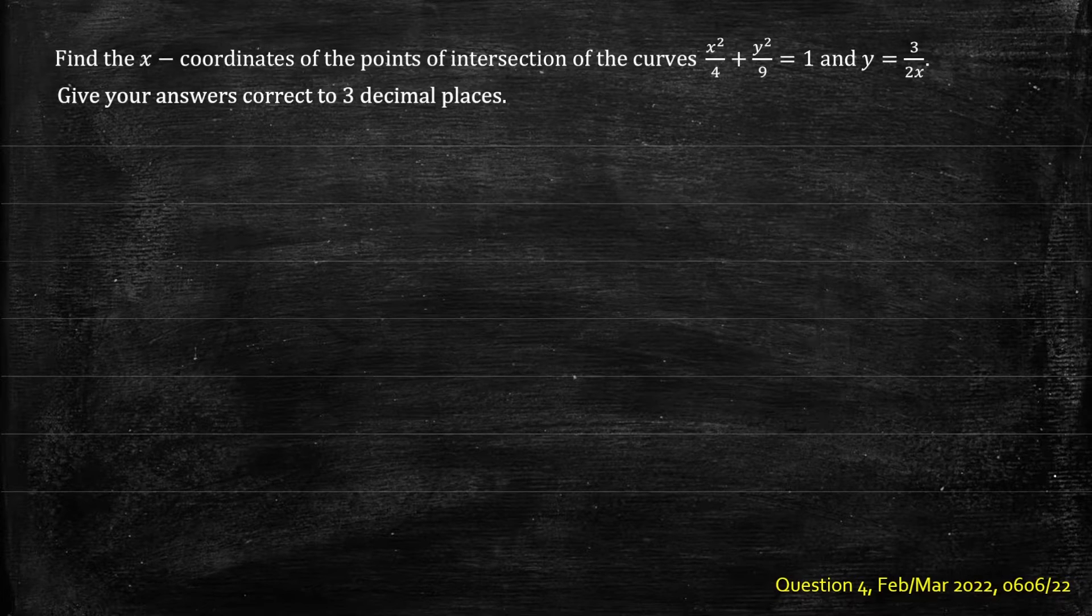Hi everyone, in this question we want to find the x-coordinates of the points of intersection of the curves x squared on 4 plus y squared on 9 equals 1 and y equals 3 on 2x. Give your answer correct to three decimal places.